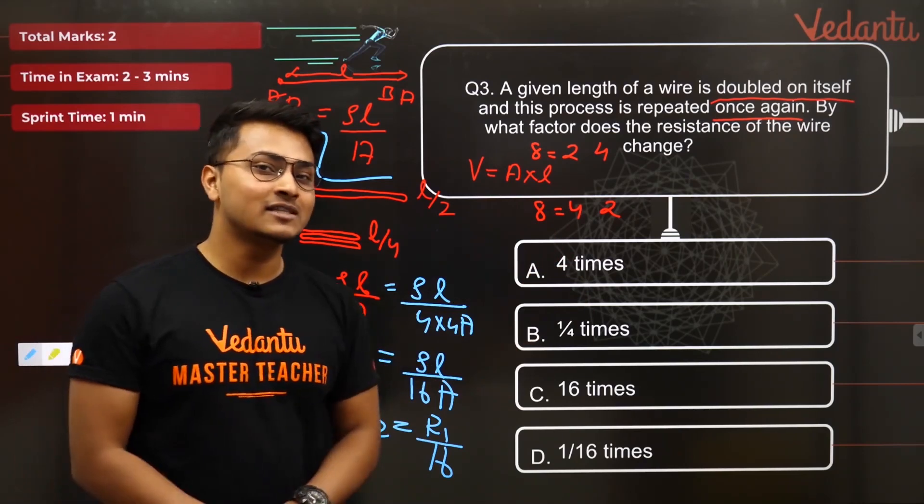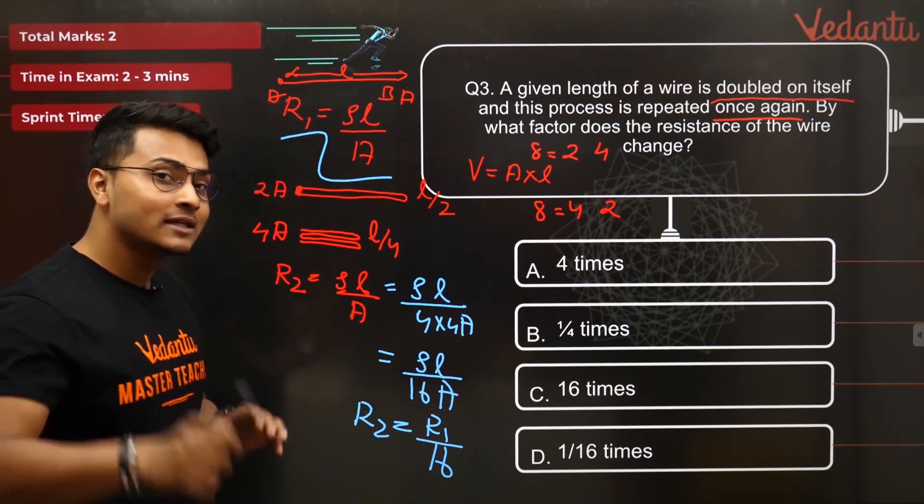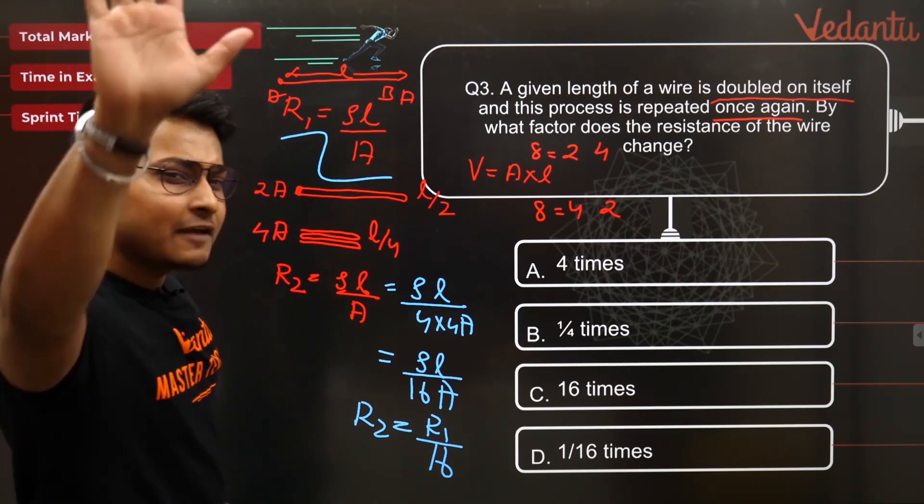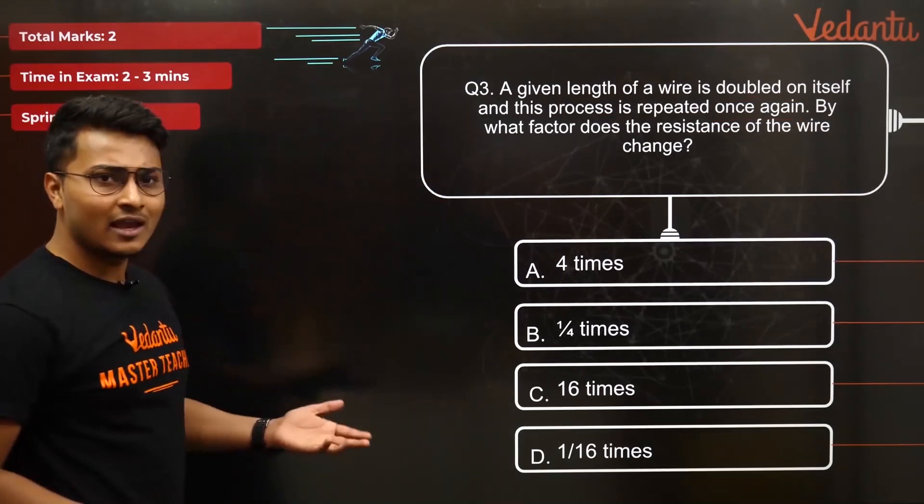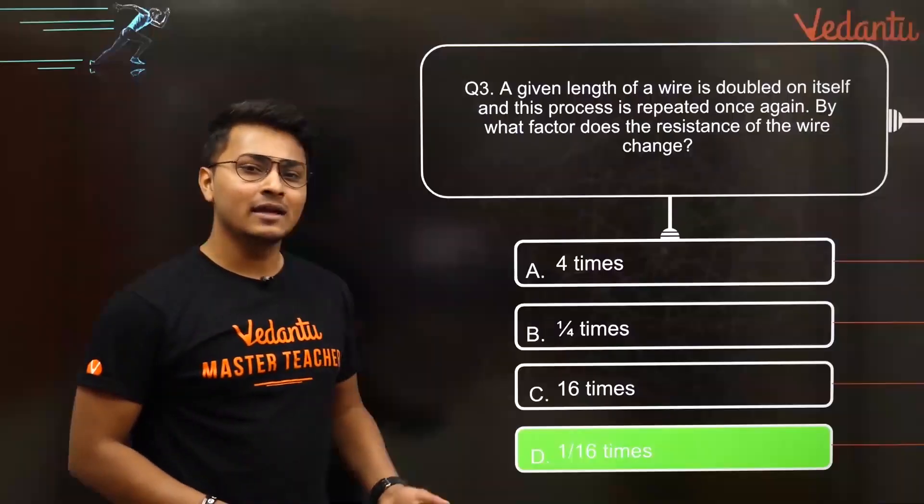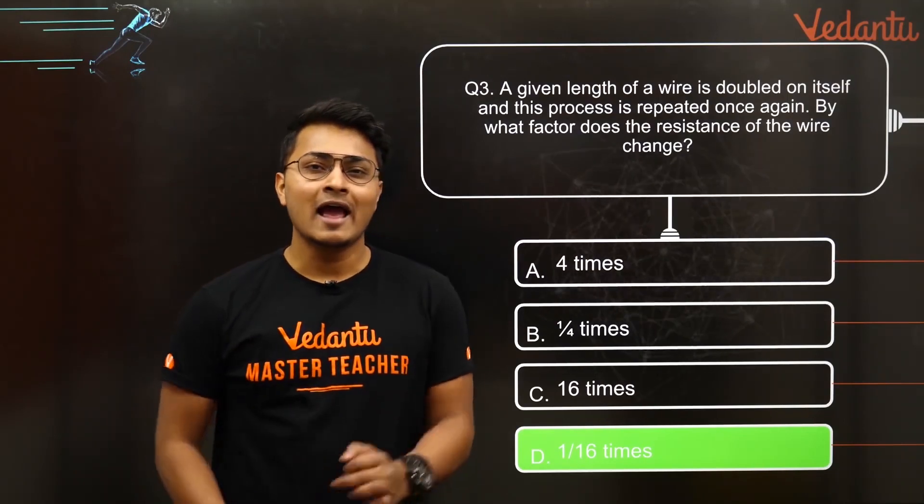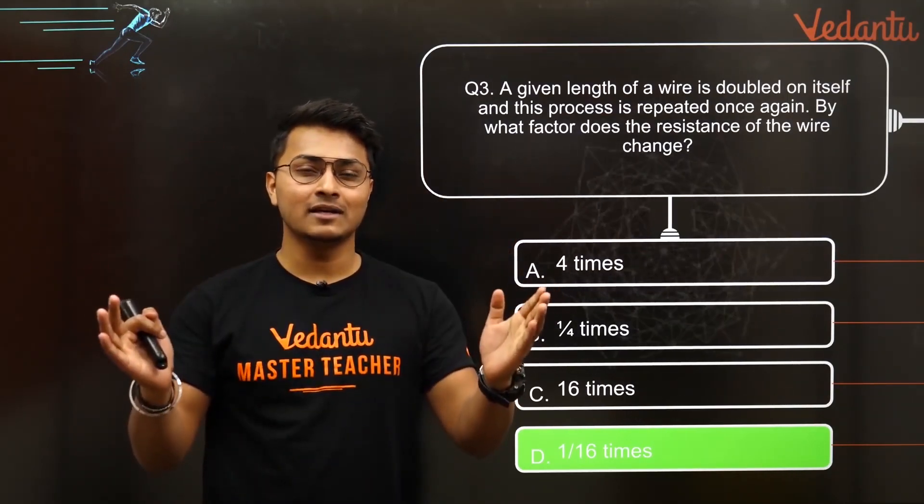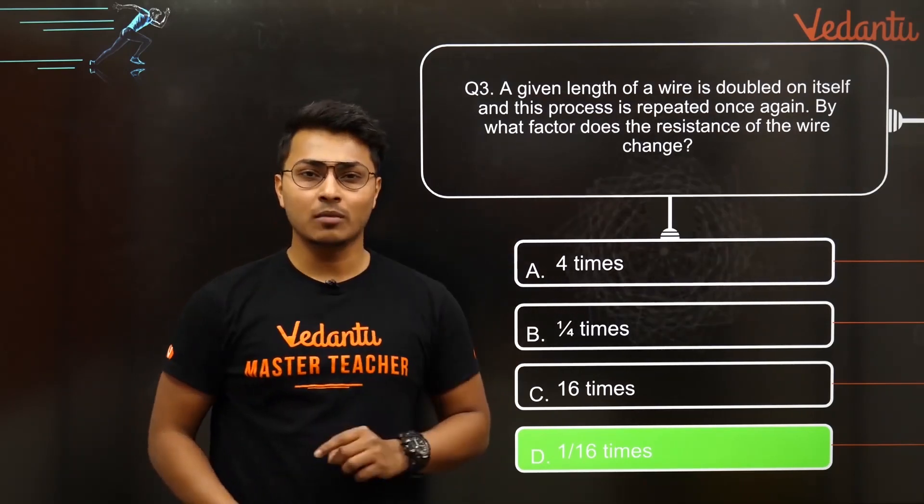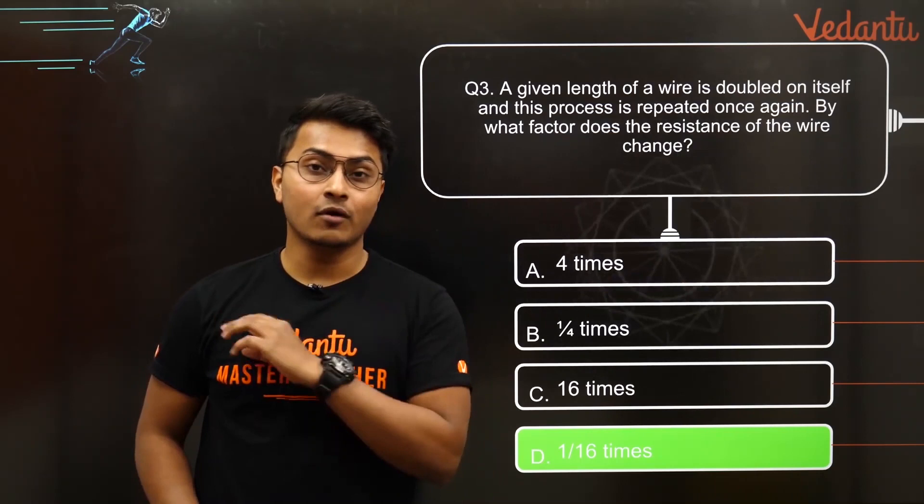So this is a very famous CBC 10th question. I believe all of you guys must have got this part. And people who got this correct answer are big high five of all of you guys. You're doing really great. I'm super proud of all of you. So let's check it out that we got the answer. Yes, 1 by 16 times is the perfect correct answer. And you are now sprinting towards the full marks in CBC 10th from the chapter electricity. Good job guys. You guys are doing amazingly well.